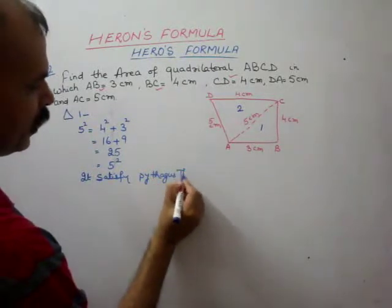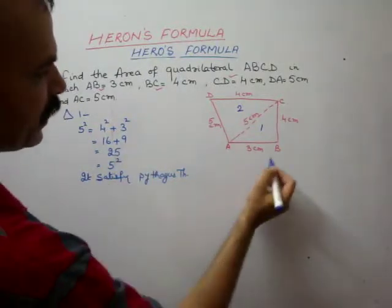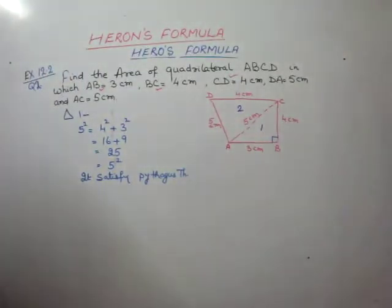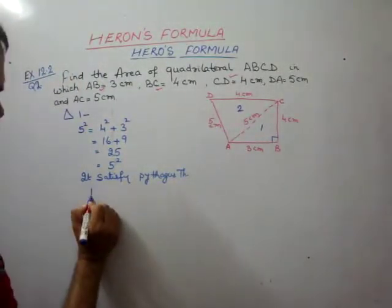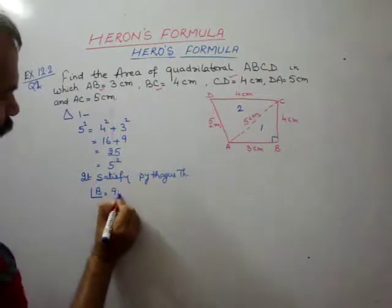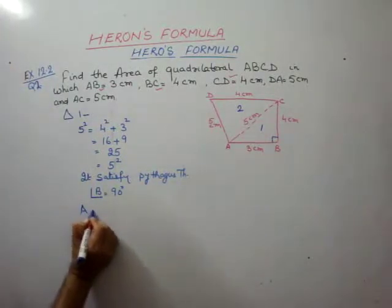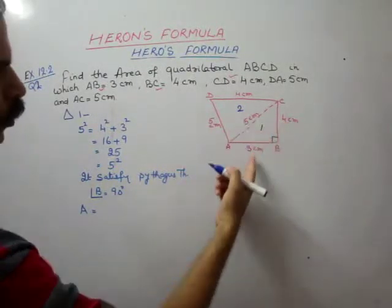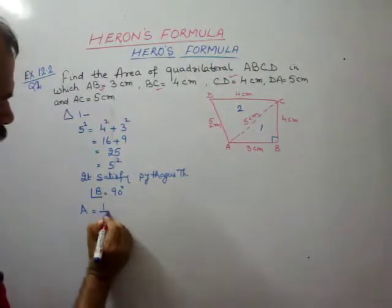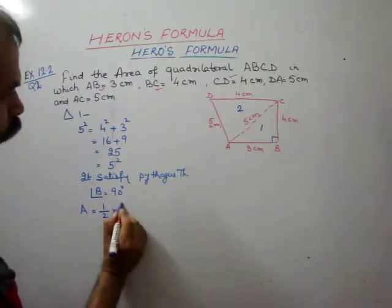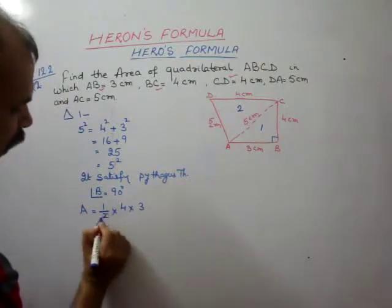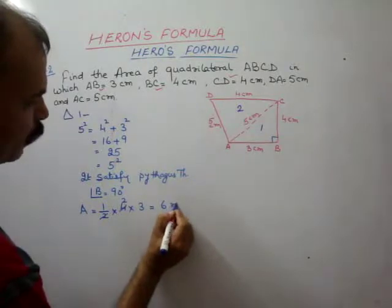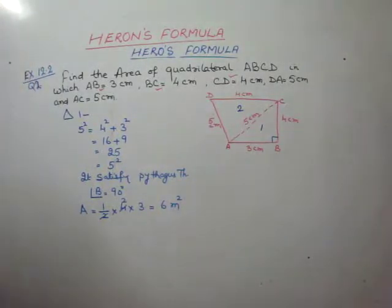Since Pythagoras theorem is satisfied, angle B is 90 degrees. So the area of Triangle 1 is ½ × base × height = ½ × 4 × 3. Simplifying, we get 2 × 3 = 6 cm².